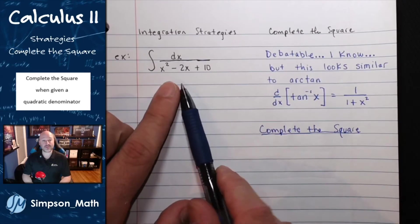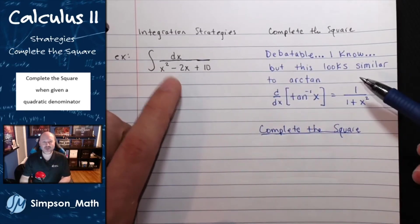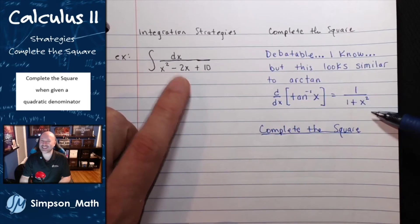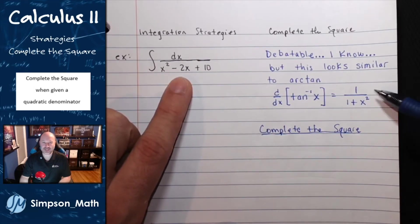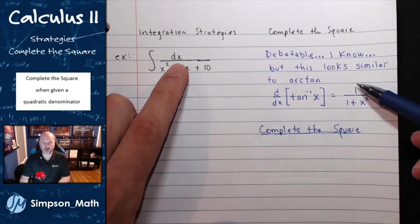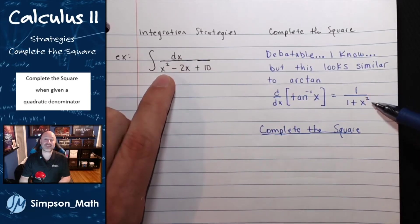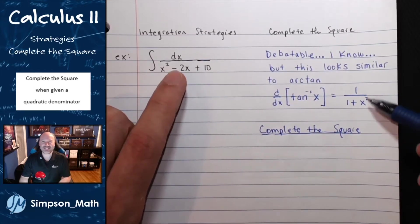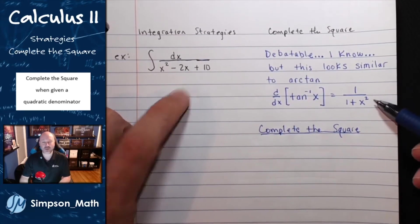So I have a bold claim over here that our integrand looks like 1 over 1 plus x squared. Now I have to admit, the only thing that even sort of rings a bell is I have a 1 in the numerator, and that it is quadratic. But I think we can get it to look something like this by completing the square.